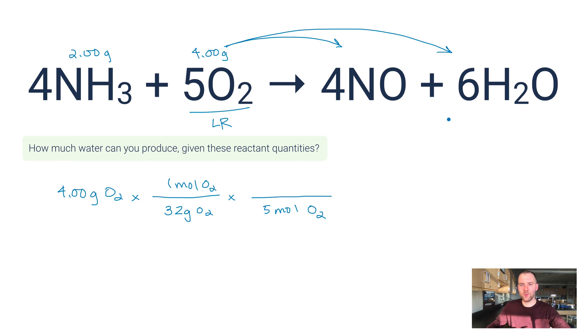This is the molar ratio, this fraction here. 5 moles of O2 to, in this case, 6 moles of water. Then the final fraction is the molar mass of water, so that I can cancel as I go here. Now I'm in moles of H2O. On the bottom is 1 mole of H2O, and on the top is the mass of that 1 mole of H2O, which is what the molar mass is, 18.02.